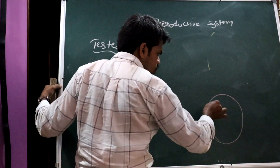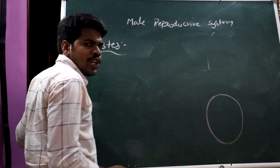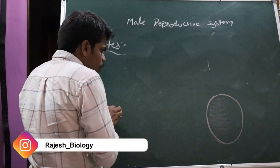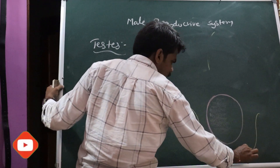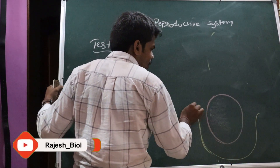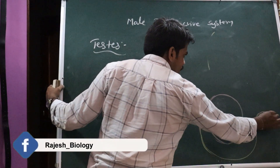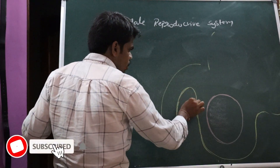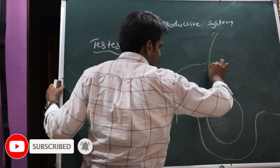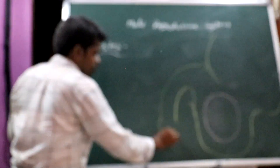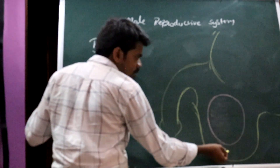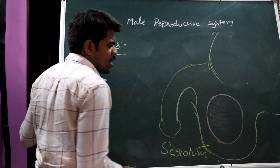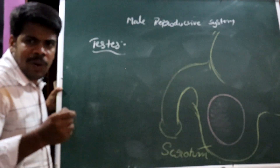I'll draw the diagram of the testes first. Testes are oval in shape and pinkish in color. These testes are present in a pouch called the scrotum, which is present outside the abdominal cavity. The scrotum is like a pouch present outside, and the testes sit within it. Testes are present outside the abdominal cavity within a pouch called the scrotum.